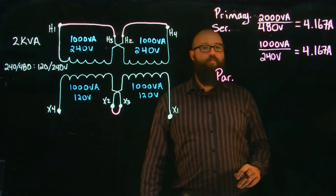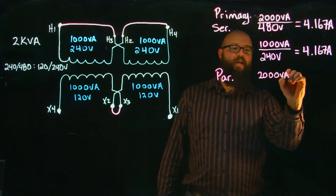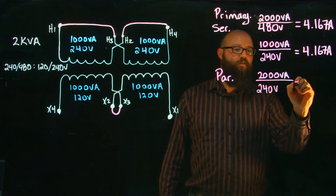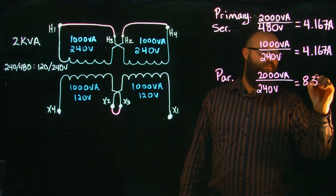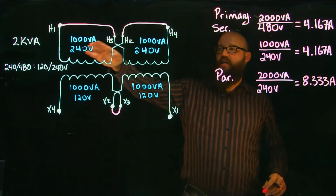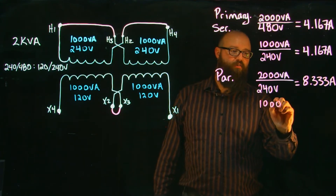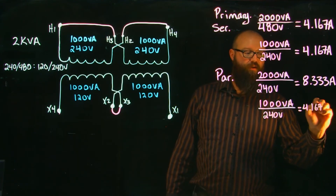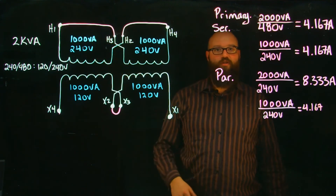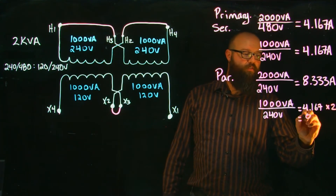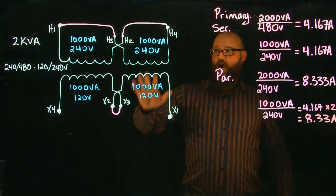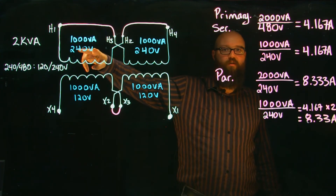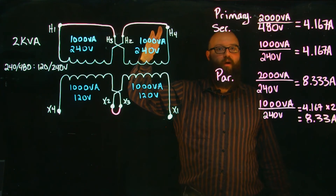For the parallel primary connection, we have 2000 VA divided by the parallel voltage of 240 volts, giving a current of 8.33 amps. Looking at individual coils: 1000 VA divided by 240 volts equals 4.167 amps, but because current is additive in parallel connections we multiply by two, which again gives us 8.33 amps. Both methods — total VA over total voltage, or individual coil calculation times two — agree.